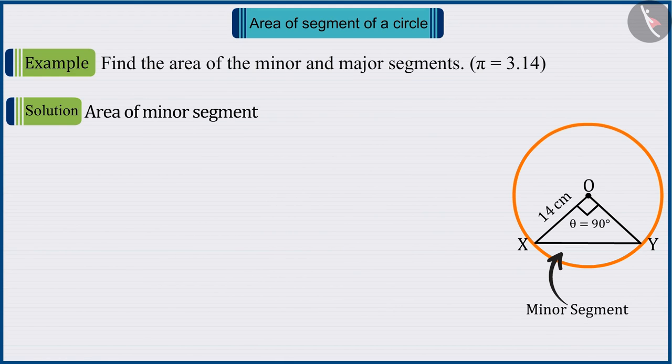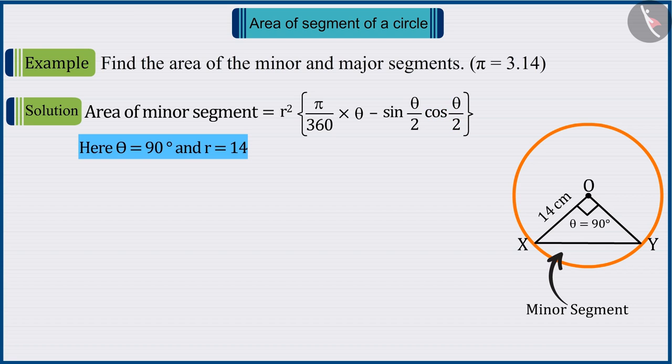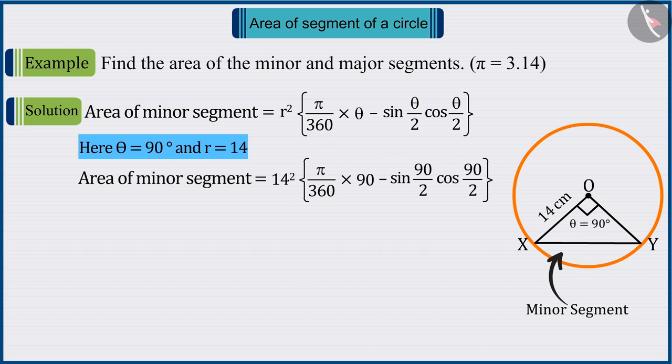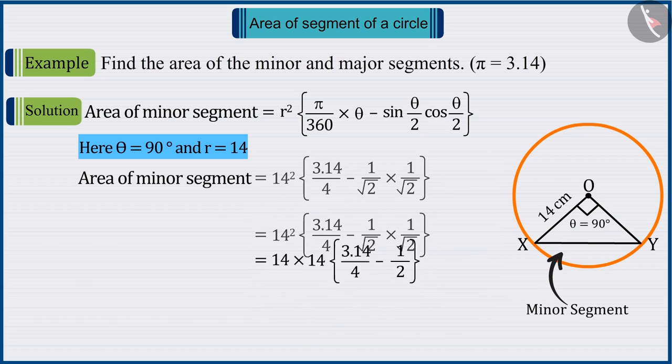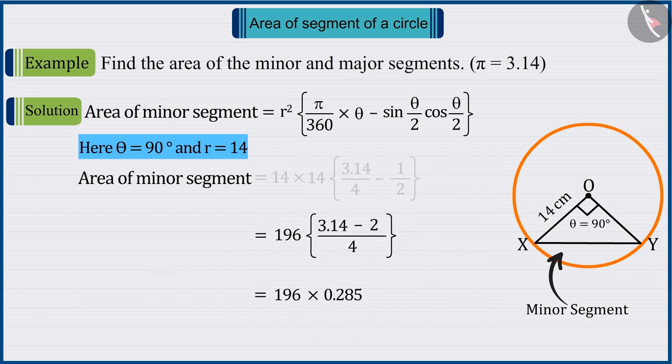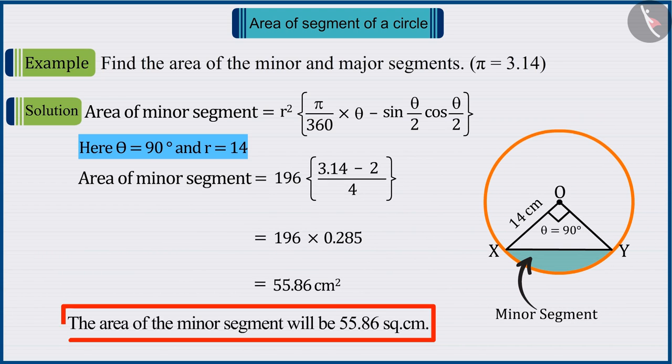The formula for the area of the minor segment is r squared times pi over 360 times theta minus sine of theta over 2 times cosine theta over 2. According to the given information, on putting the value of theta and r, that is radius, in the formula and solving, the area of the minor segment is obtained as 55.86 square centimeters.